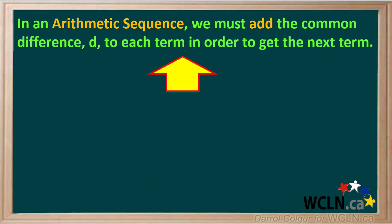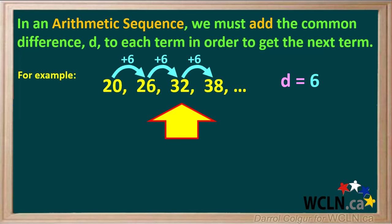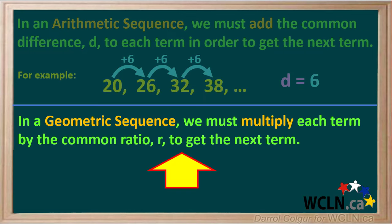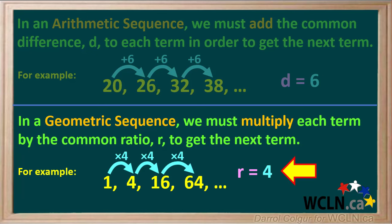So in summary, in an arithmetic sequence, we must add the common difference d to each term in order to get the next term. For example, adding 6 to each term in this sequence gives us the next term, so this is an arithmetic sequence in which d is equal to 6. In a geometric sequence, we must multiply each term by the common ratio r to get the next term. For example, in this sequence, multiplying each term by 4 gives the next term, so this is a geometric sequence in which the common ratio r is equal to 4.